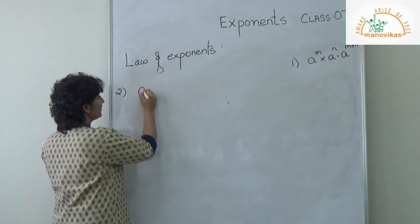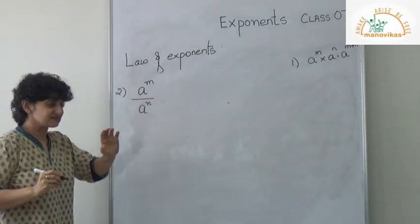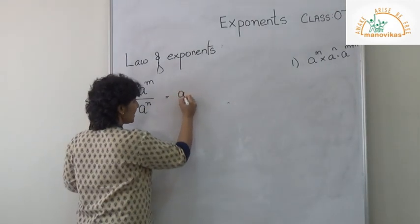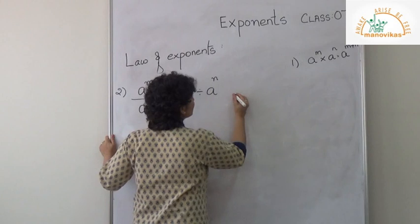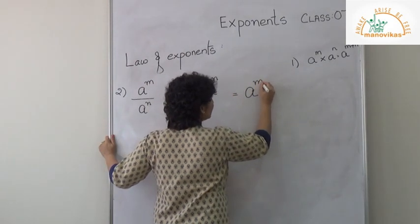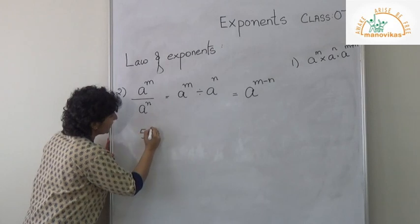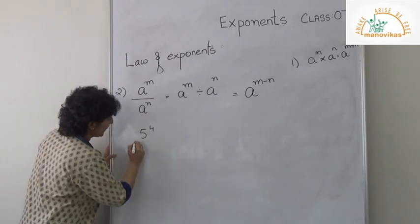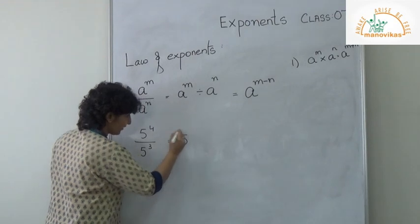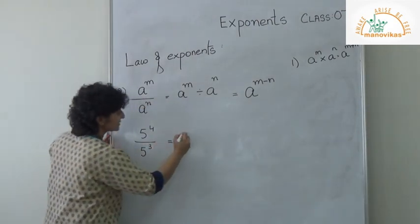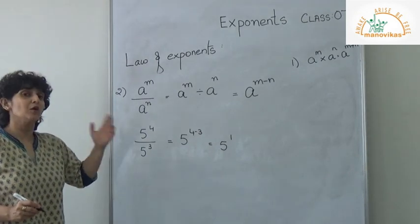Now let's try the next rule. If I have a to the power n upon a to the power n, this means a to the power n divided by a to the power n, which gives a to the power n minus n. For example, 5 to the power 4 divided by 5 cubed — I subtract the exponents: 4 minus 3 gives 5 to the power 1.